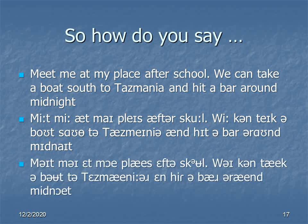In Australian, it might sound something like this: MAIT ME AT MOY PLICE AFTA SCHUUL. WI KEN TAIK A BƏƱT SÆƆTH TƏ TAZMAINIƏ EN HIT Ə BAH ƏRAƱND MIDNOIT. I realize it's a little on the silly side, but what I've tried to do is include as many of the details I've been talking about as I can, just so you can have a look at them in IPA as well as give them a listen and make a direct comparison between Australian and Canadian English.